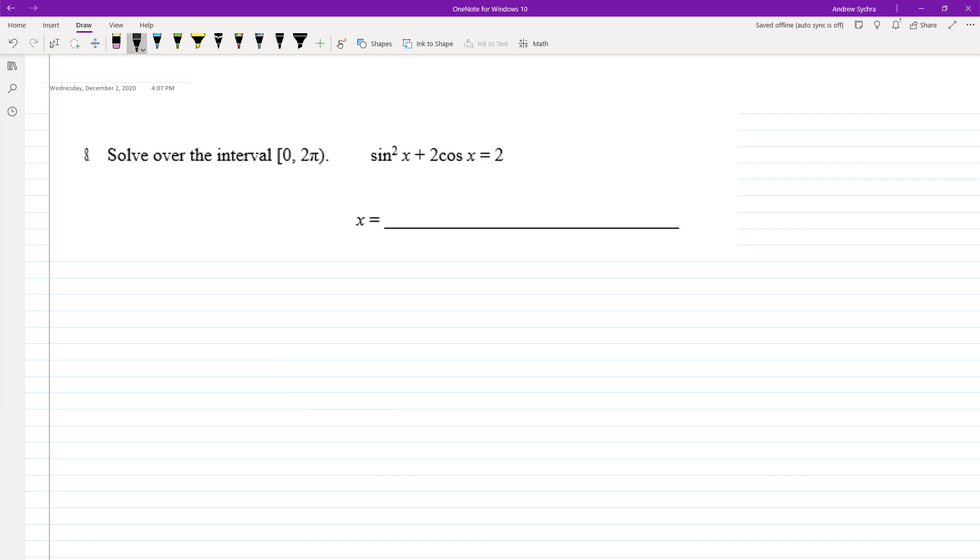What we can do is we can convert sine into 1 minus cosine squared x plus 2 cosine x equals 2. The reason I did this is because we can turn this into a polynomial and factor it.